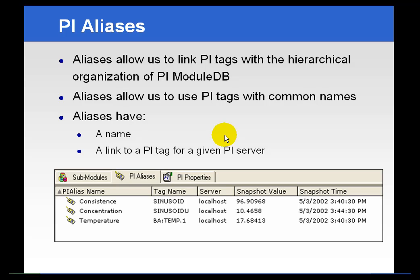PI aliases are really just common names for tags. Very often, when a tag is created by a process engineer or technician, the naming convention makes sense in their organizational structure, but it may not make sense across the entire organization. So what we do with PI aliases is allow you to do two things: to associate a common name with a given PI tag, but also to associate a series of tags together.